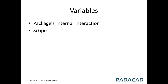We can define variable scope. For example, a variable can be scoped to the entire package, or another variable can be scoped to a specific container — so only the tasks within that container can see and use its value. Variables have a data type. Data types in SSIS are a bit different from data types in .NET framework languages, SQL Server, or other databases. They are generic types that can be mapped to SQL Server or any other database's data types — for example, string or integer data types.